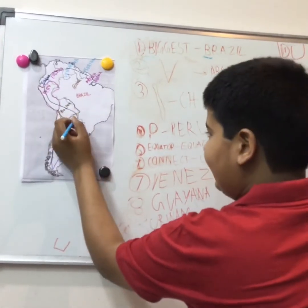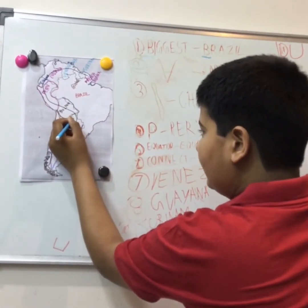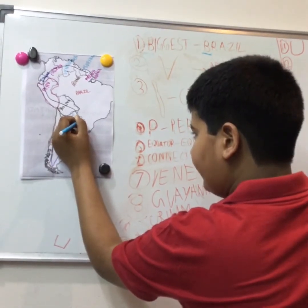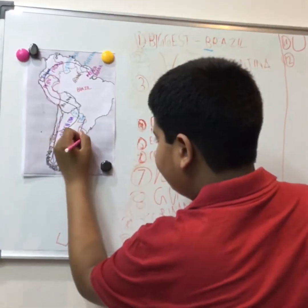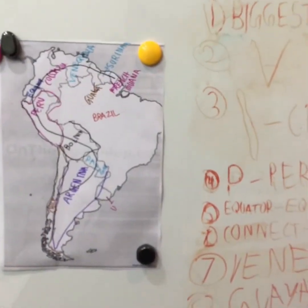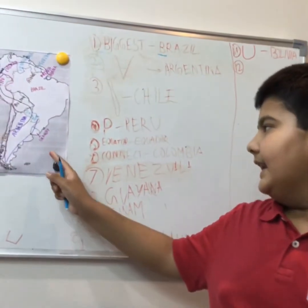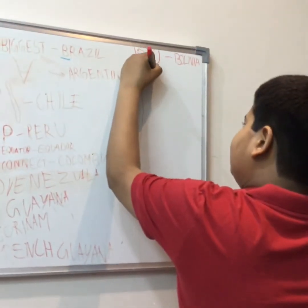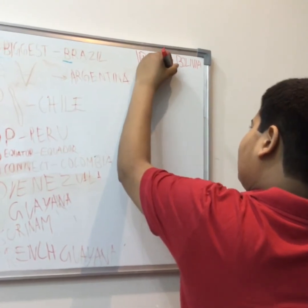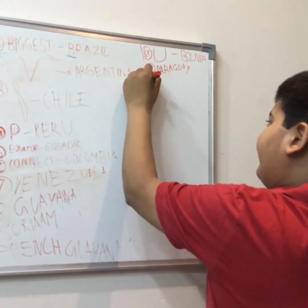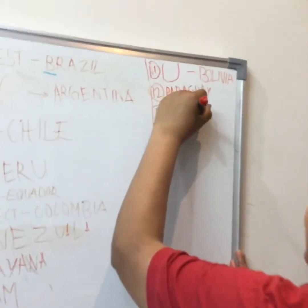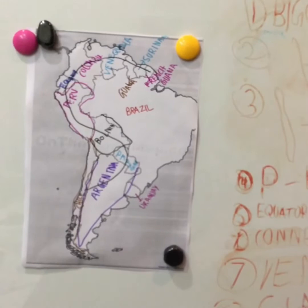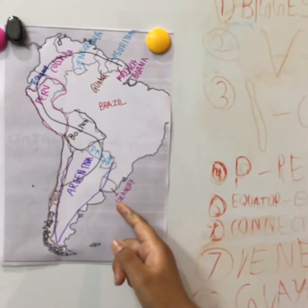The next two countries are closely related to each other: Paraguay and Uruguay. The last and thirteenth country is Uruguay. To learn them, Uruguay starts with U, and in the alphabet U is placed near the end — so here also, Uruguay comes after Paraguay, just like in the alphabet series.